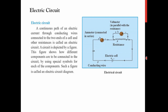The continuous path of electric current through a conducting wire connected at two ends with respect to the cell is called an electric circuit. We can introduce any instrument — a bulb, a horn, or anything we want to power — by connecting it into the circuit. These symbols are very important as they represent different types of electrical components.